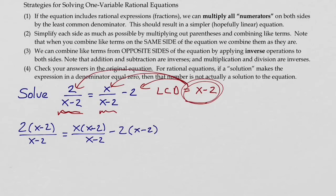So the reason why we do that, the reason why step one is very helpful, is because by multiplying by the least common denominator, we're going to be able to cancel with the denominators that exist.